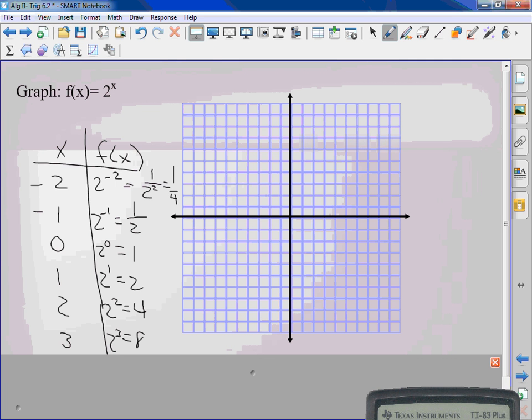When I graph this for negative 2, how much do I go up? 1 fourth. So it's just above the zero. At negative 1, it's in between zero and one. At zero, it's one. At one, it's two. At two, it's four. And then three is eight.